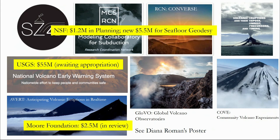To show that there's real money attached to these: NSF has already spent a million dollars in planning and $5 million for new seafloor geodesy. The USGS, if appropriated, is getting $55 million. This project is also within review in the approval process at the Moore Foundation.